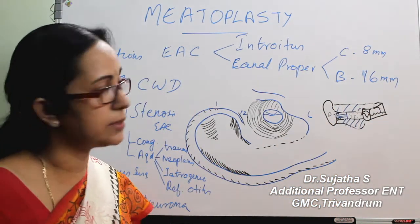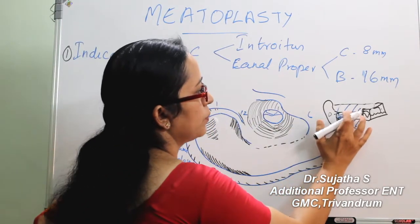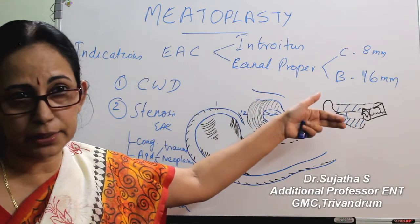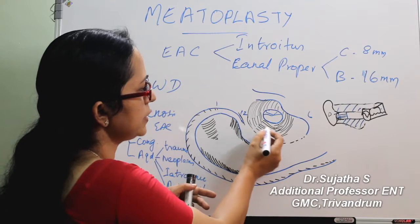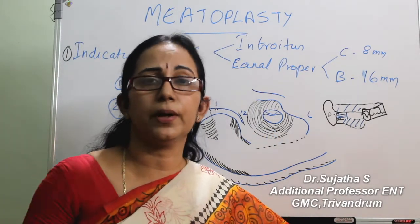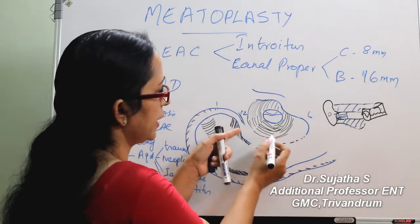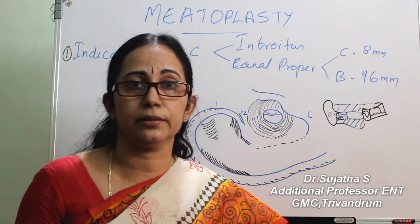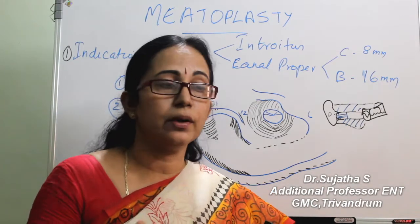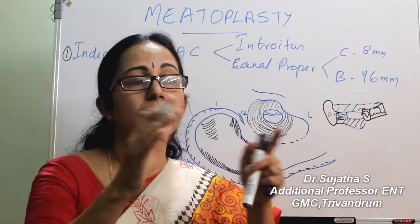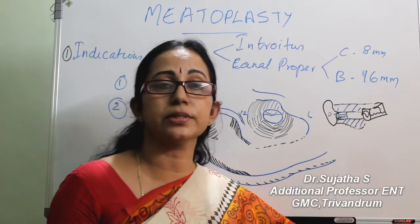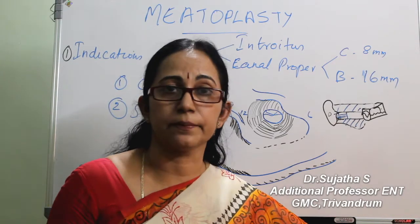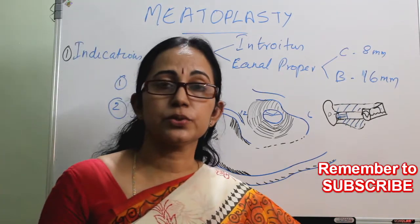We remove the bone of the external auditory canal posterior canal wall. After this, looking through the external auditory canal, you see only the skin over the bony part. The cartilaginous part remains, but the bone has been drilled away in a canal wall down procedure, so only the skin covering the bony part remains, with a mastoid bowl behind it — the mastoid and middle ear all exteriorized and cleared of cholesteatoma.